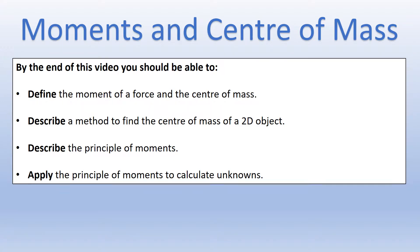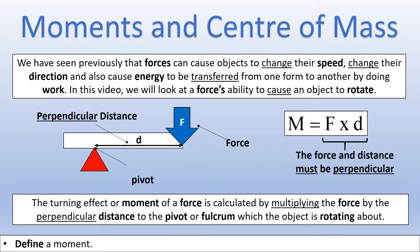Let's start by defining what a moment is. In previous videos we've seen that forces can cause an object to change speed, change direction, and cause energy to be transferred. This video is more focused on how we can make an object rotate using a force. A moment is defined as a force multiplied by its perpendicular distance to a pivot. On the diagram, the red triangle is a pivot — set up like a seesaw. The force is shown in blue and the distance is at 90 degrees to the force, between where the force acts and the pivot. We calculate the moment of force F by multiplying it by distance d, which is at 90 degrees to it. That is how we define a moment.